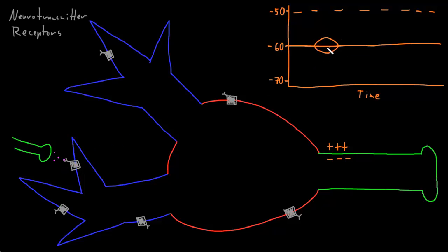The graded potentials that are produced depend on which types of ions are allowed to pass, because some channels allow only one type of ion to pass while others allow multiple types. It also depends on how many channels are opened, which depends on the amount of neurotransmitter released into the synapse, and on how long the channels stay open, which depends on how long neurotransmitter stays in the synapse. If a channel opens that is selective for only one type of ion, the membrane permeability for that ion is increased, causing the potential of the membrane around the channel to move toward the equilibrium potential of that ion.